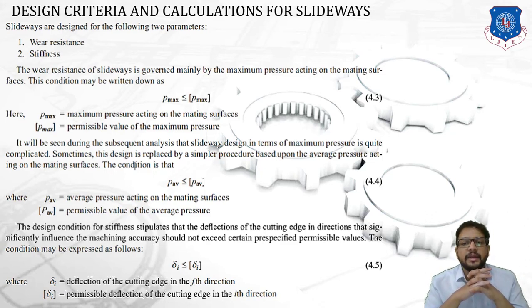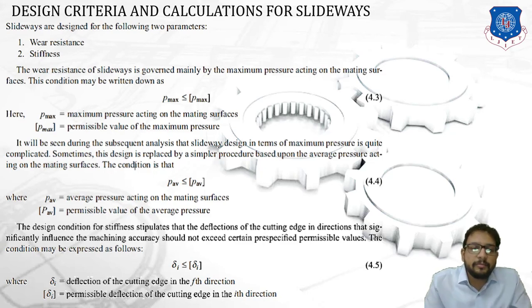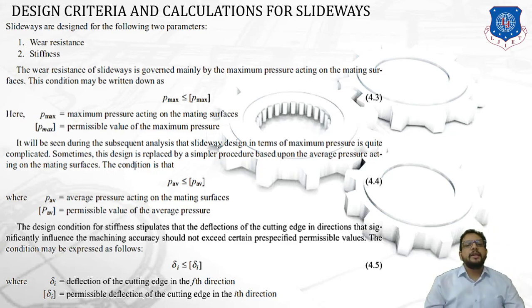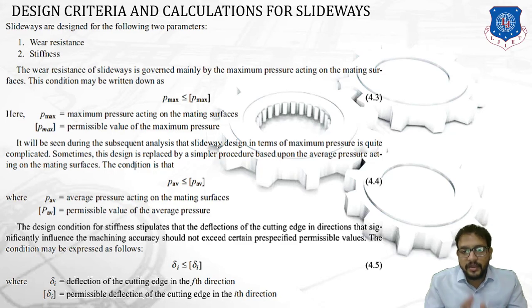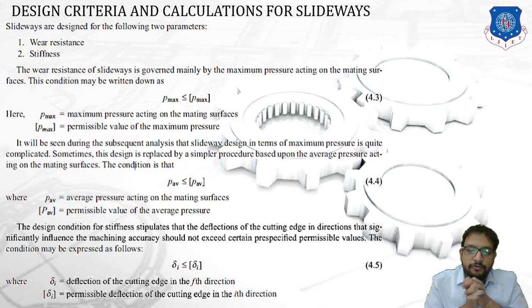The wear resistance of a slide way is mainly governed by maximum pressure acting on a mating surface. The condition may be written as P_max ≤ [P_max], where [P_max] is the permissible value and P_max is the maximum pressure acting on the mating surface. Since this design is quite complicated, it is sometimes replaced by a simpler procedure based upon average pressure, converting equation 4.3 into the form P_avg ≤ [P_avg].